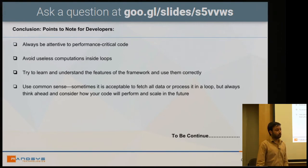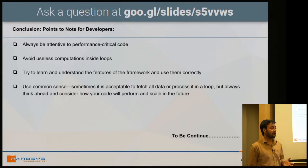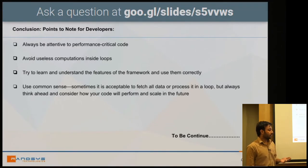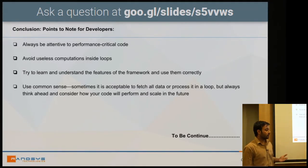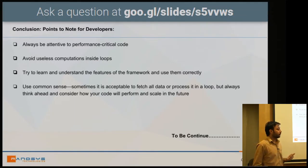In conclusion, key points for developers: always be attentive to performance-critical code. When developing, our first goal is to complete the functionality, and performance is often an afterthought. For small systems with 50 to 200 users this may be fine, but as the system grows, poorly written performance-critical code becomes a major problem that is very difficult to optimize later. From the start, we must keep performance in mind when writing code in Magento.